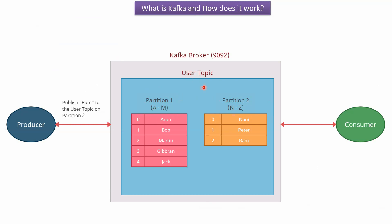In the user topic, there are two partitions: partition 1 and partition 2. Usernames starting with A to M will go into partition 1. Once partitions are introduced, the publisher has to specify in which partition within the user topic the username should go. Because of these partitions, the data is distributed and we achieve scalability, and each partition will grow independently.